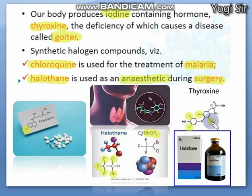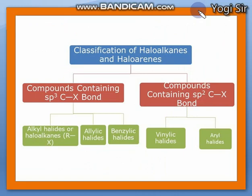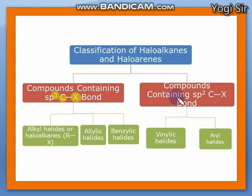So these are some of the important uses of haloalkanes. Next we see classification — the classification of haloalkanes and haloarenes. There are two major classes: the first is compounds containing a halogen atom bonded to an sp3 hybrid carbon atom; the second major class is compounds in which halogen atoms are bonded to sp2 hybrid carbon atoms.